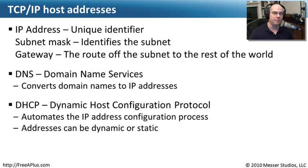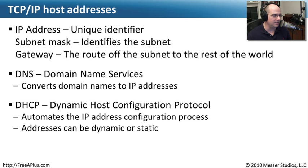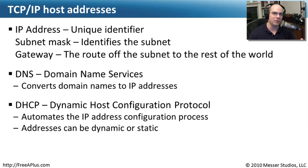With DHCP, you may have a pool of addresses that can be assigned to you. When you come into the office one day you'll have one address, and the next day you might have a completely different address. But for certain servers on your network that you want to have the same IP address every time they start up, you can tell your DHCP server to always assign that server a specific static IP address. Everybody else who just needs an address for the day can receive a dynamic IP address from the available pool.